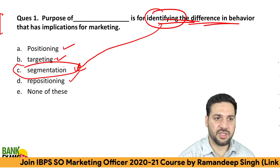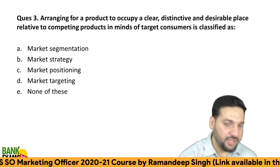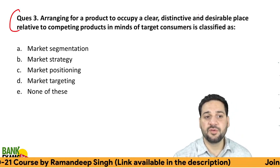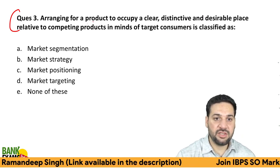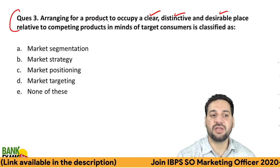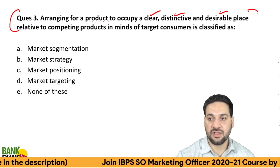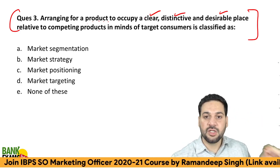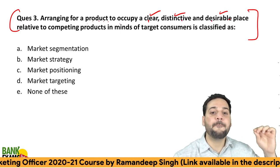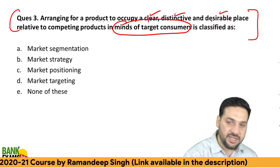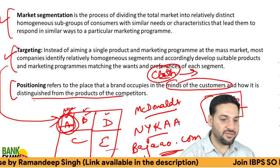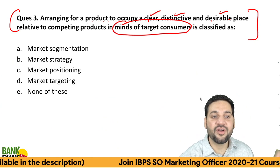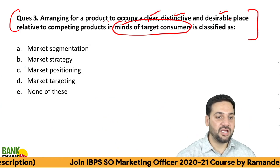Next question: 'Arranging for a product to occupy a clear, distinctive, and desirable place relative to competing products in the minds of target consumers.' Please read it carefully — occupying a place in the minds of target consumers. What is this? This is market positioning.